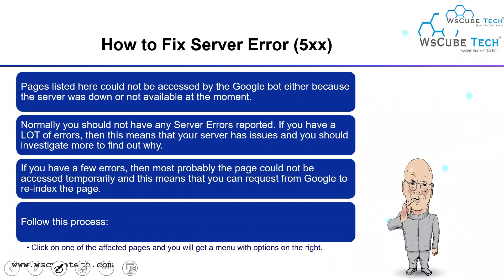How to fix server error 5xx: The pages listed here could not be accessed by Googlebot either because the server was down or not available. Normally, you should not have any server errors reported. If you have a lot of errors, it means your server has issues and you should investigate further to find out why. If you have a few errors, most probably the pages could not be accessed temporarily, and you can request Google to re-index those pages by clicking on the URL and doing inspection.